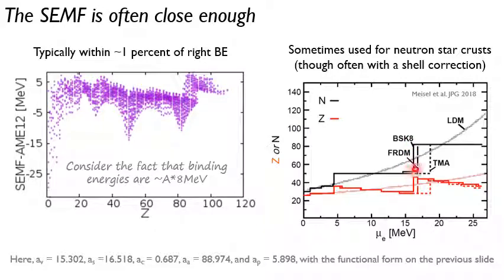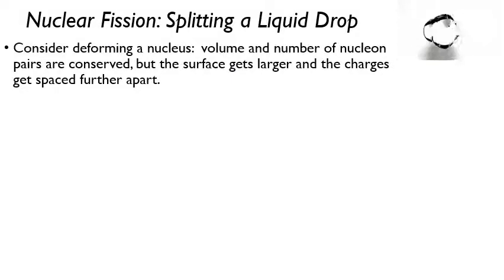And then what you can cook in by hand if you want is so-called shell corrections. And that is what will make you jump at a given depth from one proton or neutron number to another. But in general, the liquid drop model does pretty amazing. And if you want the fit parameters for the functional form on the previous slide, these are the ones that I fit to the 2012 atomic mass evaluation data.